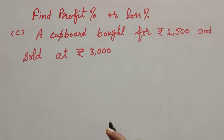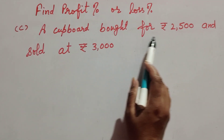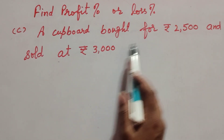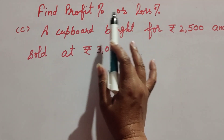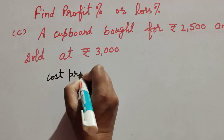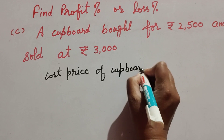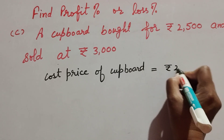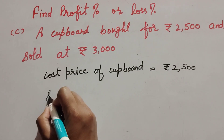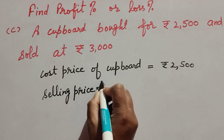Hello friends, welcome to my channel. In this video we discuss finding profit percent or loss percent. A cupboard was bought for rupees 2500 and sold at rupees 3000. Cost price of the cupboard is equal to rupees 2500 and the selling price of the cupboard is equal to rupees 3000.